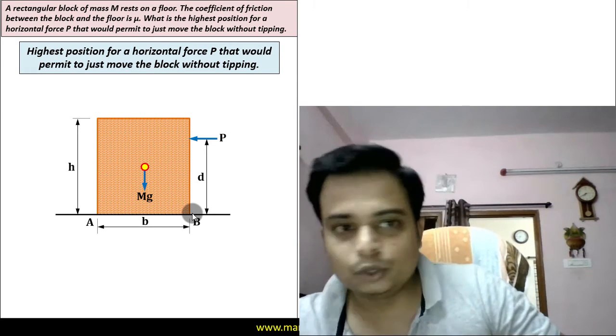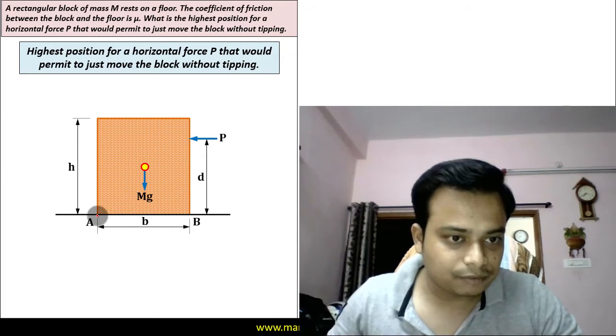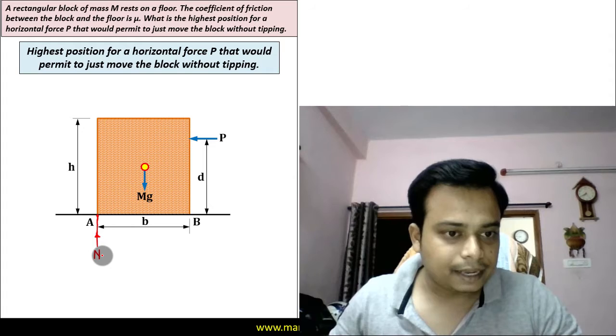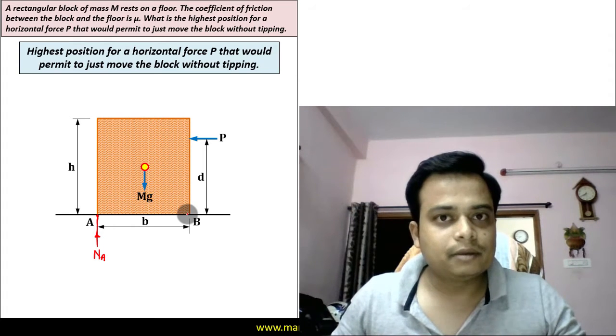There is going to be a normal force at A somewhere here. Let me make this - let's call this as N_A. Well there is no point of contact at B as the block is just about to tip.